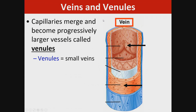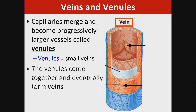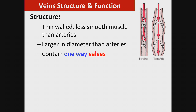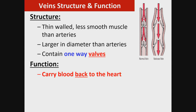Capillaries merge and become progressively larger vessels called venules. Venules are small veins, and they come together to eventually form veins. Veins have one-way valves to prevent flow of blood the wrong way. They have less smooth muscle than arteries, are thin-walled, larger in diameter on the inside, and they carry blood back to the heart.